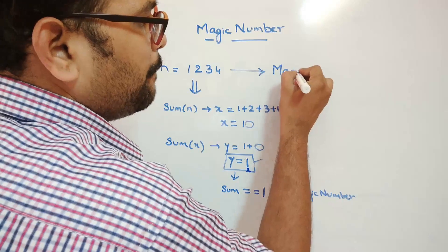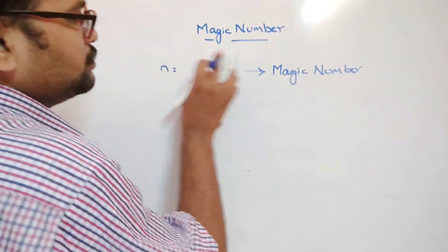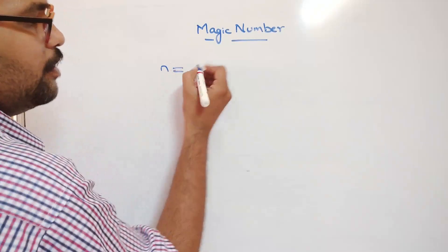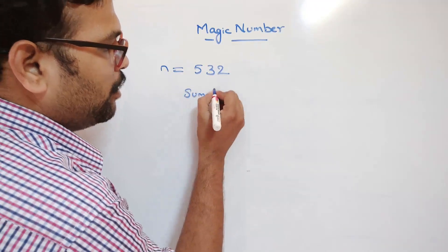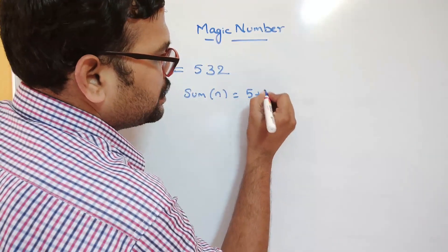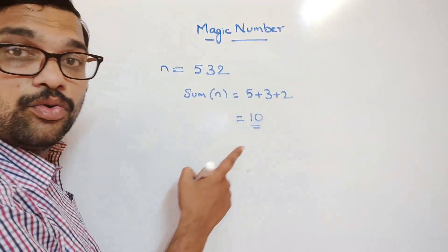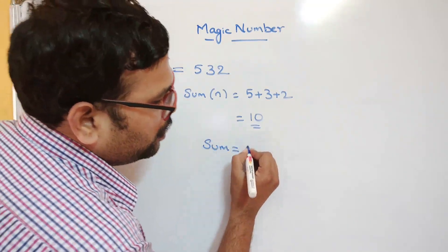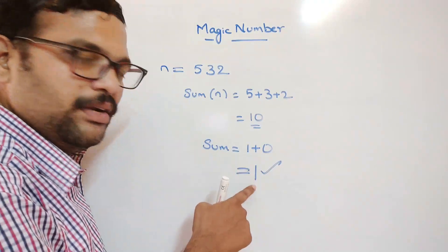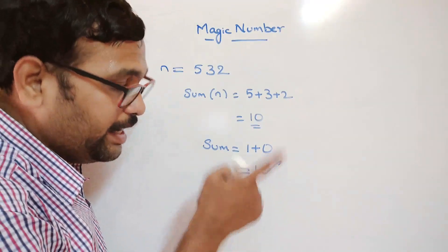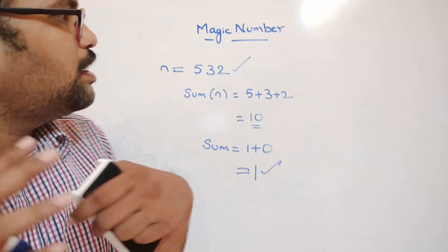One more example: consider 532. Sum of digits = 5+3+2 = 10. Since 10 is a two-digit number, apply the sum again: 1+0 = 1. The final sum is 1, which is a single digit equal to 1, so 532 is also a magic number.